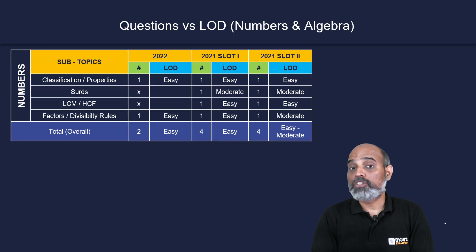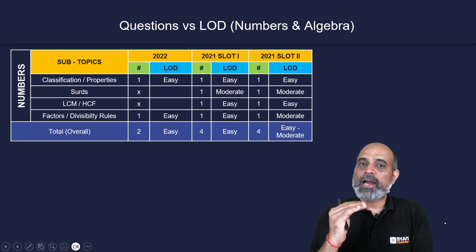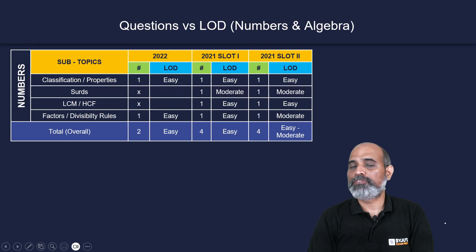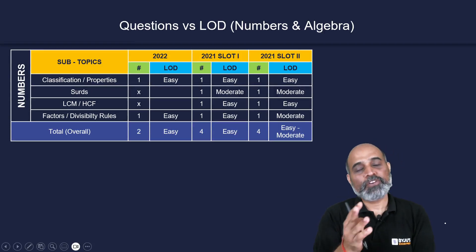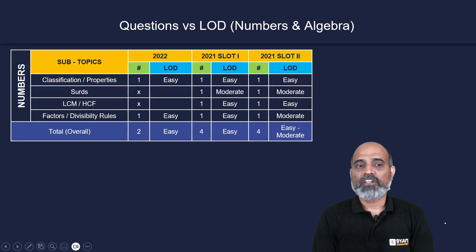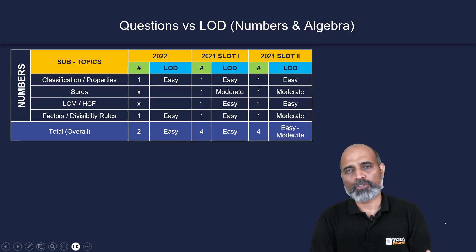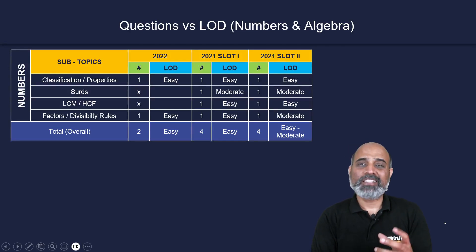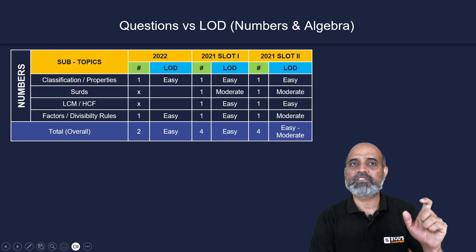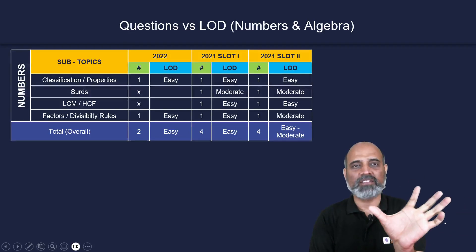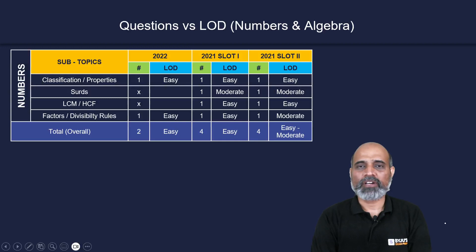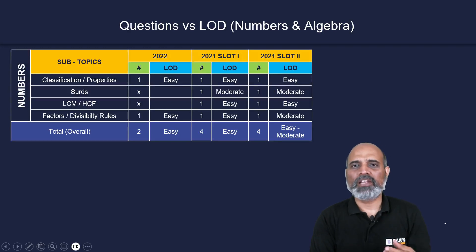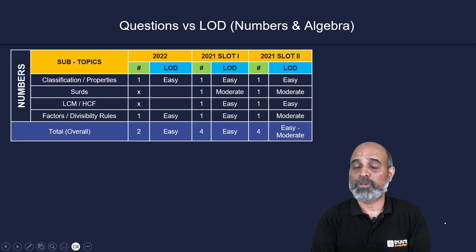In slot two, you again had one question from each of those four topics. Half were moderate, half were easy. Classification of numbers, properties, and HCF/LCM questions tend to be easy. Surds can be moderately difficult if the terms are lengthy. Factors and divisibility rules require some concept application as word problems, which can push them to moderate.